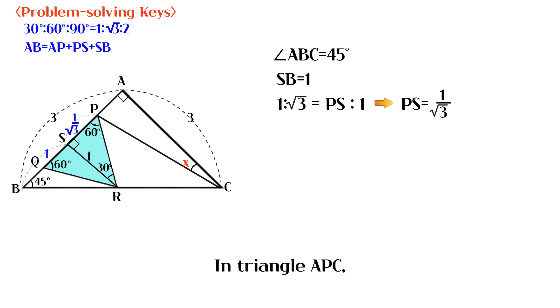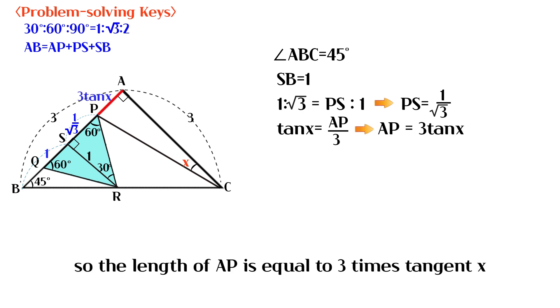In triangle ABC, tangent X is equal to AP over 3. So the length of AP is equal to 3 times tangent X.